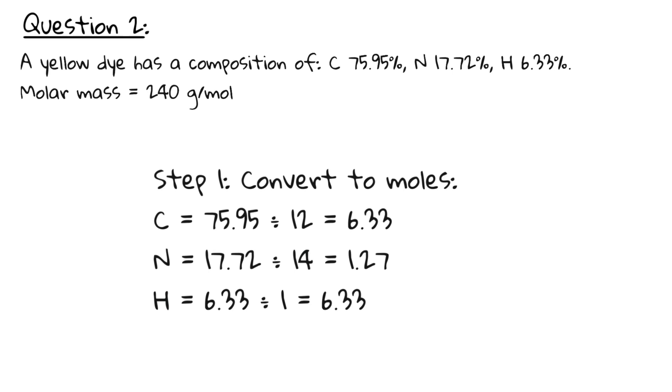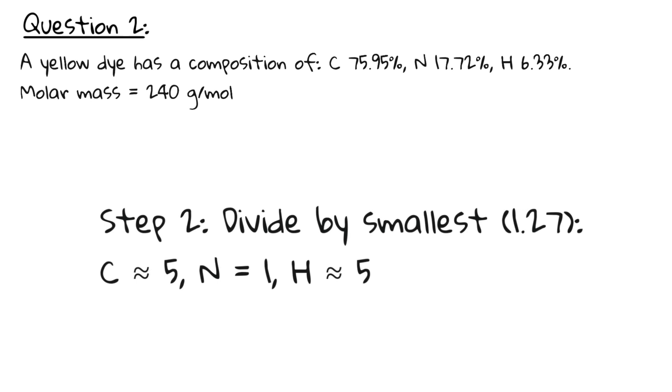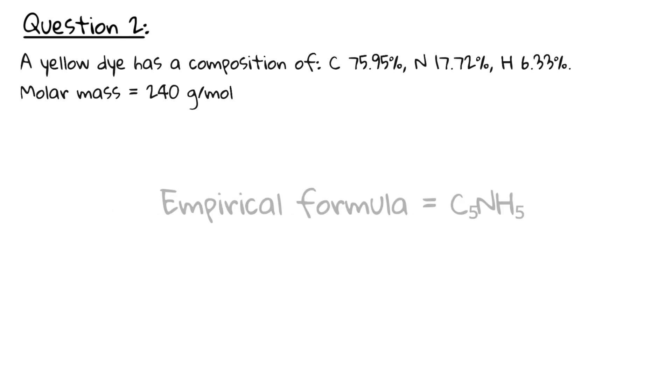As before, we assume 100 grams and convert to moles. Then we divide by the smallest value. This gives us the empirical formula of C5NH5.